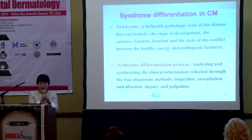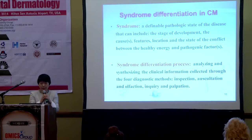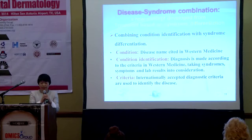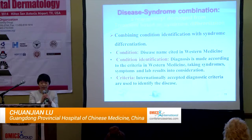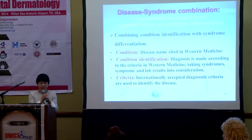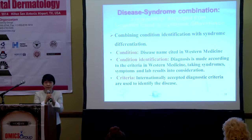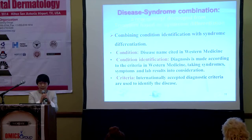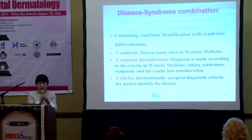The syndrome differentiation process involves analyzing and synthesizing the clinical information collected through four diagnostic methods, such as inspection, auscultation, inquiry, and palpation. Disease-syndrome combination is a new concept developed from treatment based on syndrome differentiation. It means combining condition identification with syndrome identification.